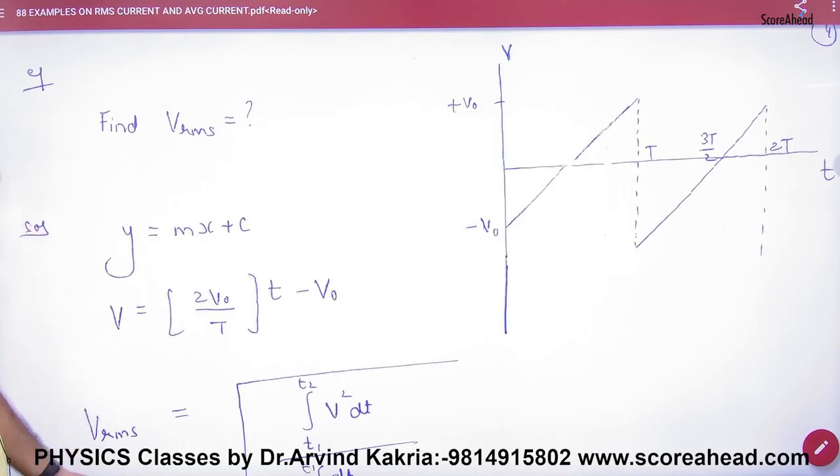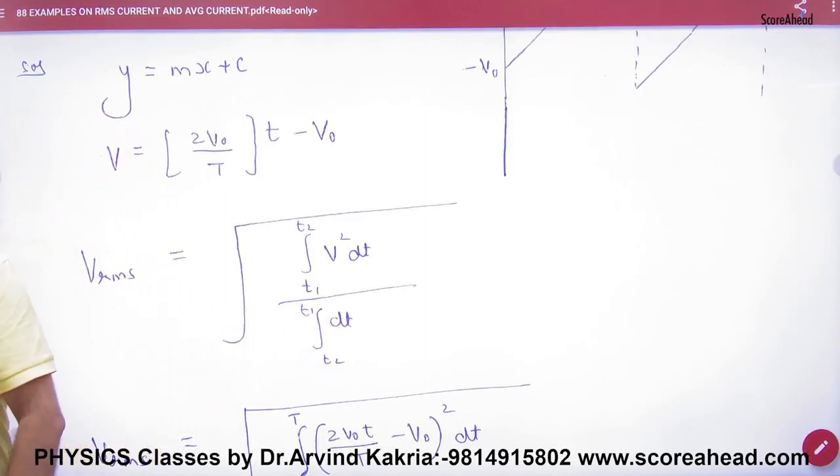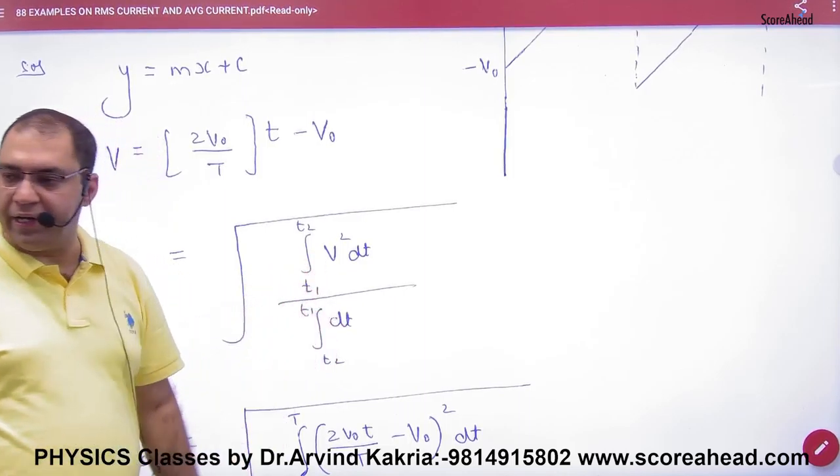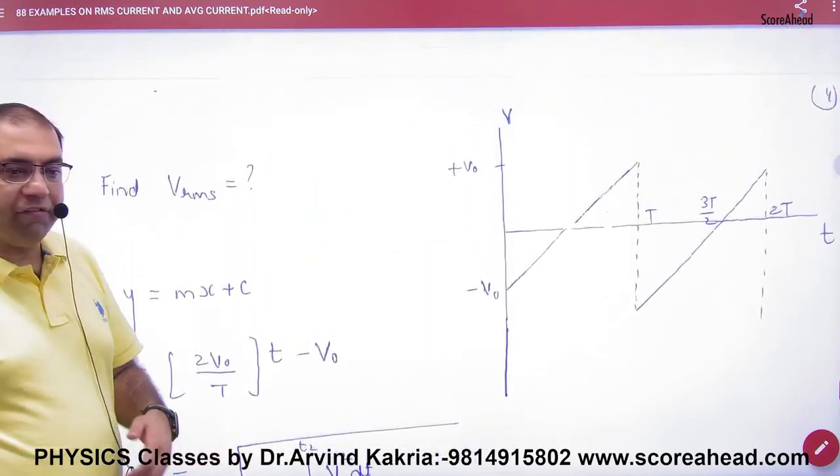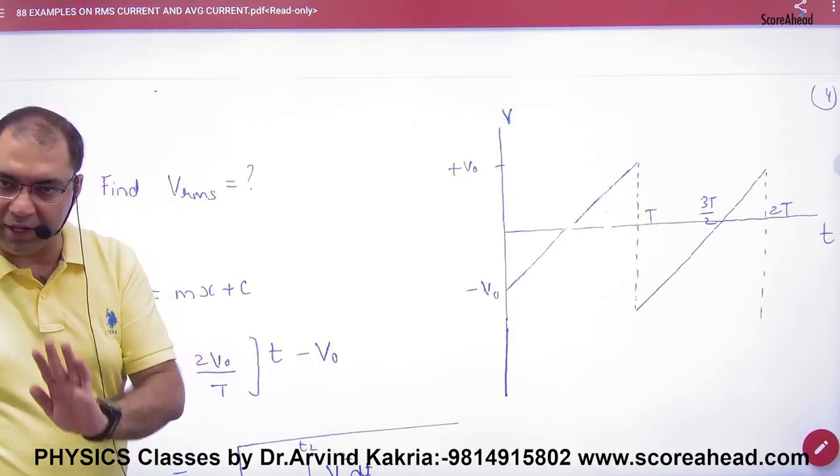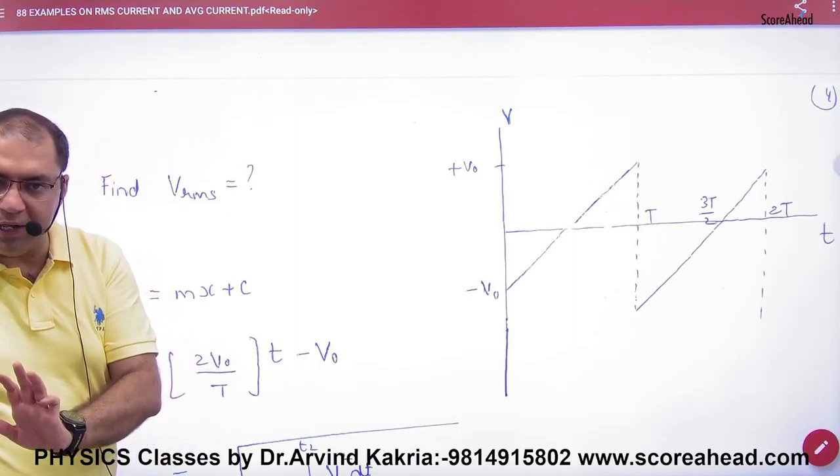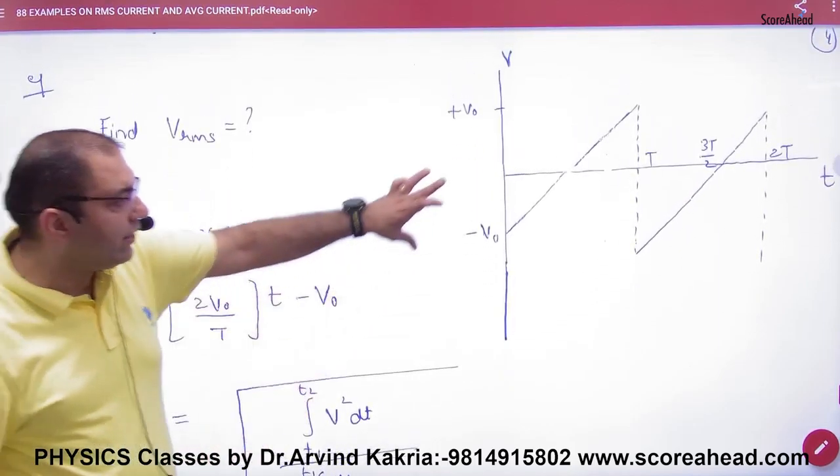What do you want to remove? You have to remove RMS value of voltage. I know the formula of RMS, it is this formula. How to calculate RMS voltage? v²dt upon integration of dt. Now I know, if you tell me v's value, v as a function of time, then my answer will come.